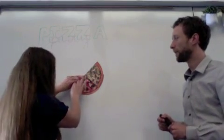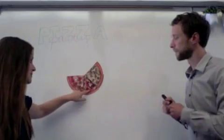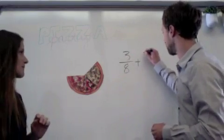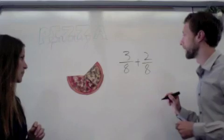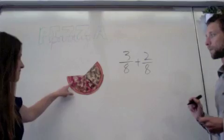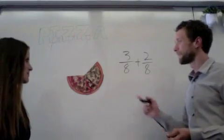So how much do we have total? You had three eighths. I'm adding two eighths. So three eighths plus two eighths. Okay, so how much is that? One, two, three, four, five eighths. Okay. That makes sense.